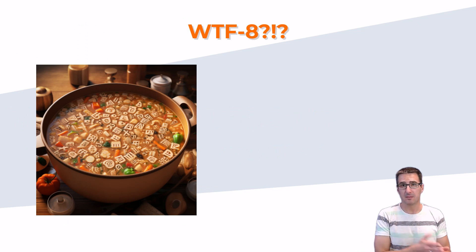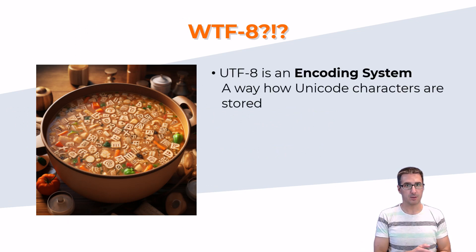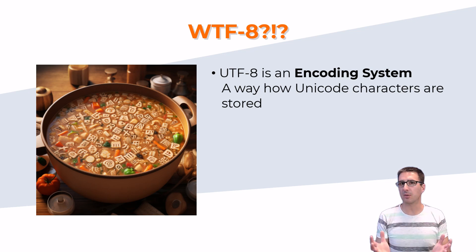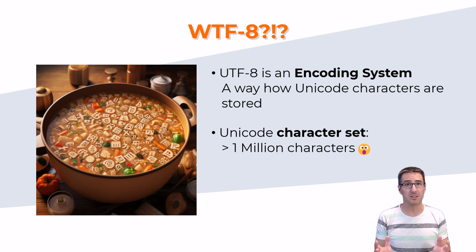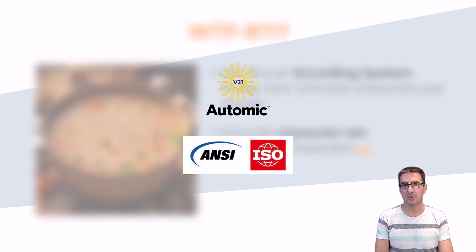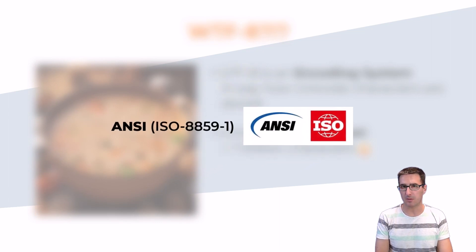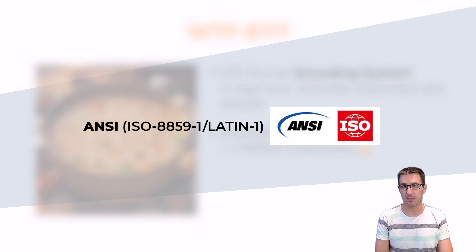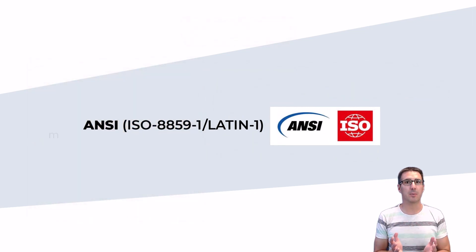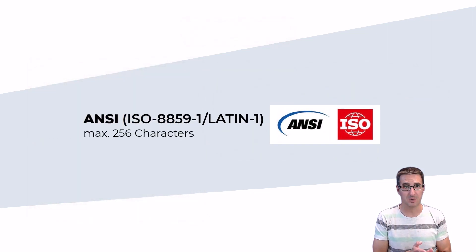What is UTF-8? UTF-8 is an encoding system for Unicode characters — one of the ways Unicode characters are stored. The Unicode character set contains more than 1 million characters. Automic supports only ANSI character sets up to and including version 21, for example ISO 8859-1, also known as Latin 1. These ANSI character sets have a maximum of 256 characters.